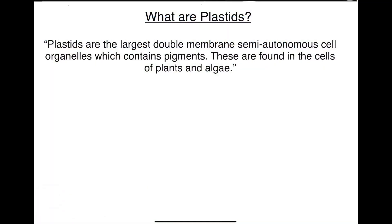Hello everyone, today we are going to learn about plastids. What are plastids? First I will explain about plastids, then we will see the types and then their functions. If we want to understand plastids in simple words, we can say these are the cell organelles which have pigments. Plants have different colors — flowers, vegetables, and fruits are different colors — and these colors are given by these cell organelles which are called plastids.